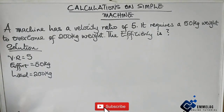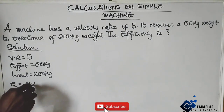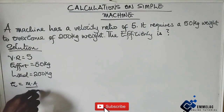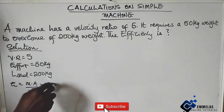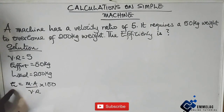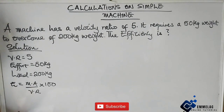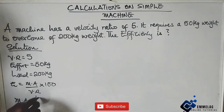From the formula, efficiency equals mechanical advantage over velocity ratio times 100. We are going to find the efficiency. We don't have the mechanical advantage directly, but we have the velocity ratio. Recall that mechanical advantage equals load over effort.